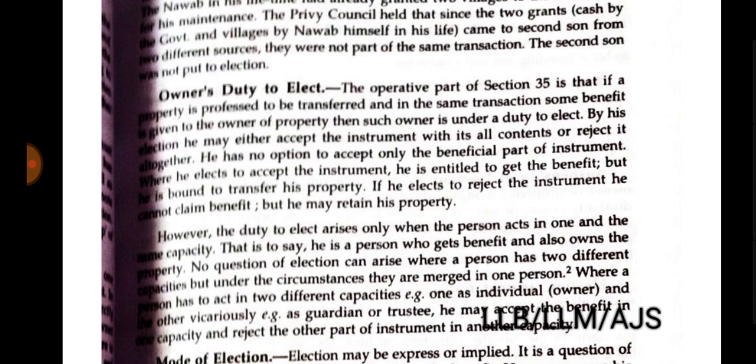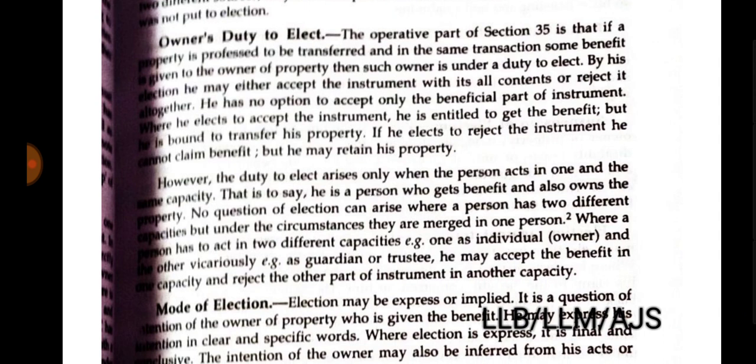Owner's duty to elect. The operative part of Section 35 is that if a property is professed to be transferred, and in the same transaction some benefit is given to the owner of the property, then the owner is under a duty to elect. He may either accept the instrument with all its contents or reject it altogether, but he cannot accept one part and reject another part which is disadvantageous to him. He has no option to accept only the beneficial part of the instrument.